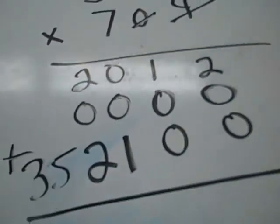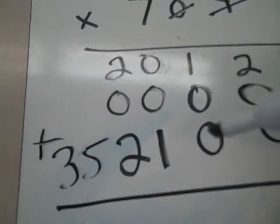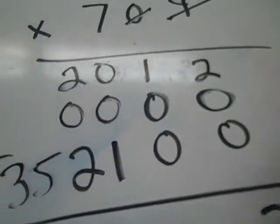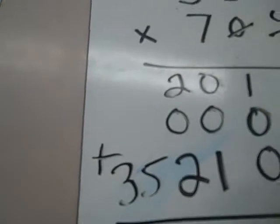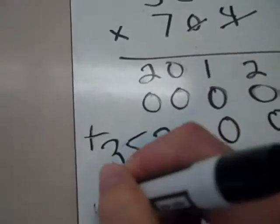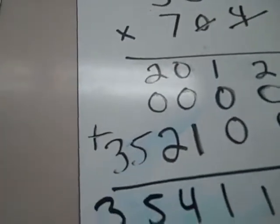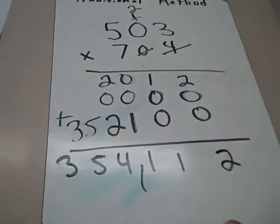Now, we're simply going to add up. Make sure you write your numbers in columns so they're easier to add. We've got 2, 1, 1, 4, 5, and 3. And that is your answer.